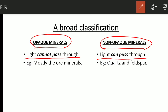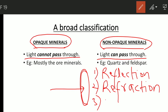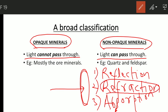Is that the only thing happening? No. Suppose we have a mineral or any substance and light strikes it — three things may happen. First is reflection. Second is refraction. And third is absorption. Refraction does not occur in opaque minerals; it only occurs in non-opaque minerals, because non-opaque minerals allow the light to pass through them, or transmit light through them.